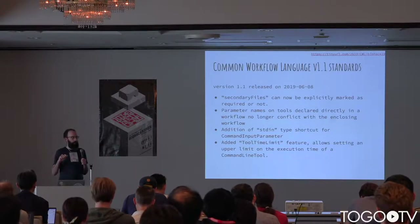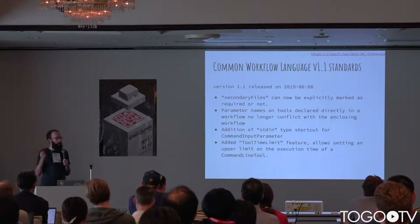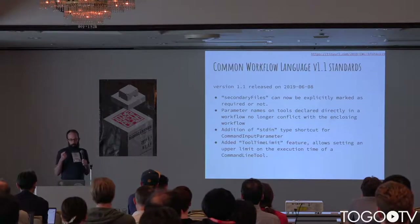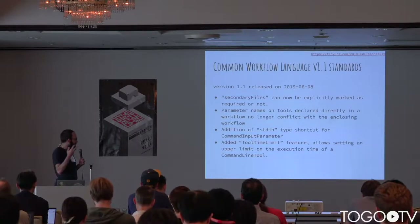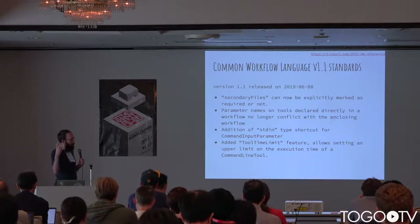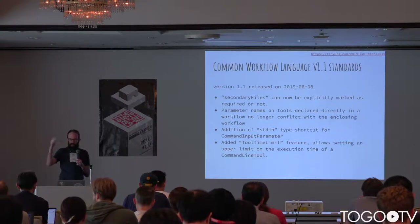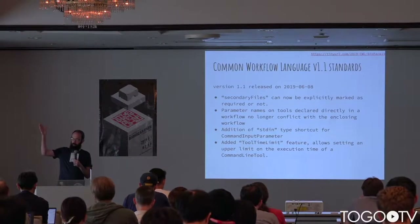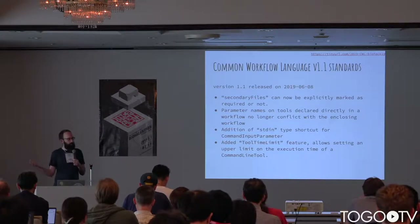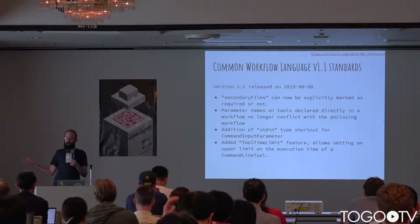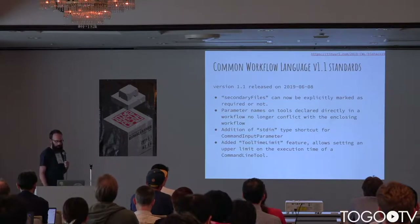We shouldn't have had those hurt. One of them is secondary files — if you use that feature, they can now be optional. When combining tools, when your next tool is a sub-tool inside a workflow, you had to make the names different, which was kind of silly — that's no longer a problem. We also had shortcuts for standard out and standard error, and now there's standard in too. We forgot to leave that in at 1.0.